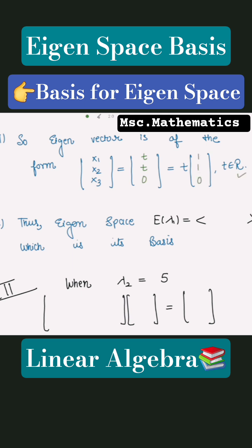Where t is belonging to the real numbers. So this is your eigenvector. And now finding the eigenspace E(lambda 1), that is equal to, just write this column vector in this format, which is its basis.